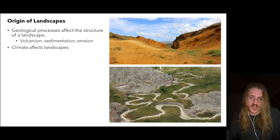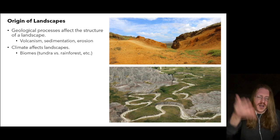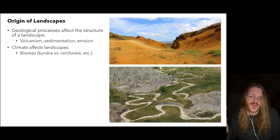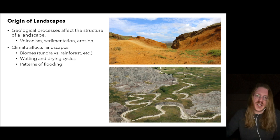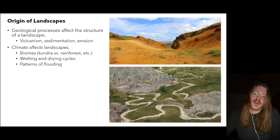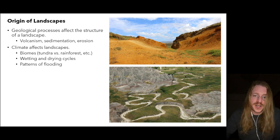Climate also plays a big role. Think about biomes: what makes something tundra versus rainforest? Differences in temperature, precipitation, and seasonality. Wetting and drying cycles, including periodic floods, are also powerful drivers of landscape structure. And if we look at an interaction between climate and geology, glaciers are an excellent example.